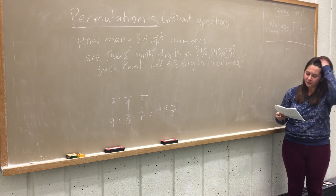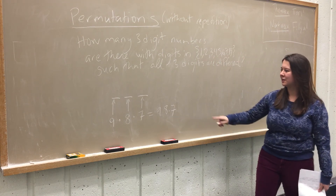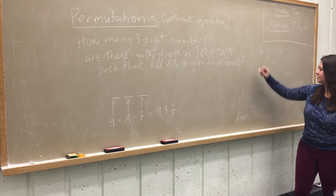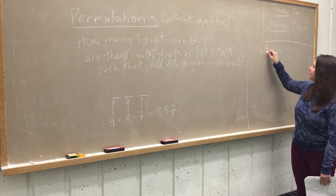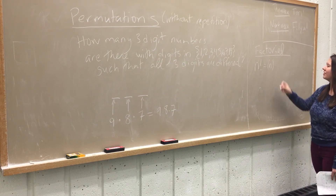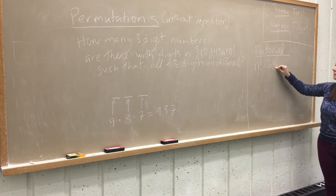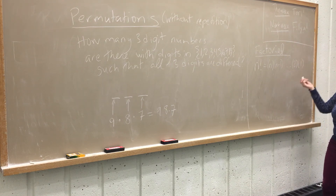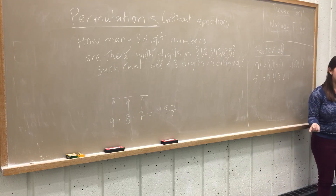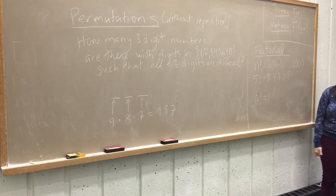Formulating this as 'take the number of things you're choosing from and multiply down to however many you're trying to choose' is complicated to say, so to the rescue is the factorial function. By n factorial, for a non-negative integer n, we mean the product of all integers down to one. For example, five factorial is 5 × 4 × 3 × 2 × 1. As a convention, we say zero factorial equals one — we'll see why this matters in a little while.